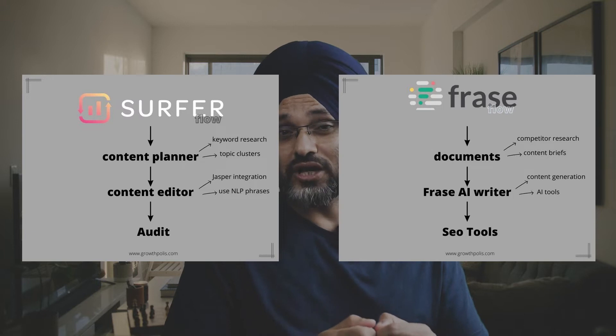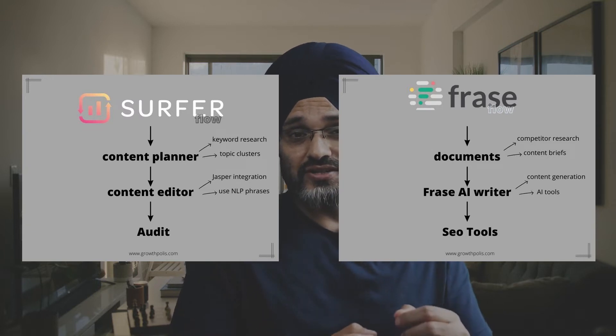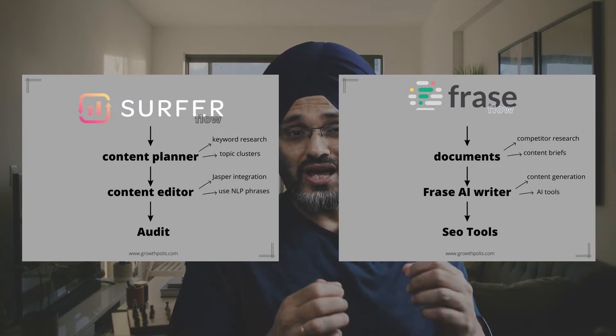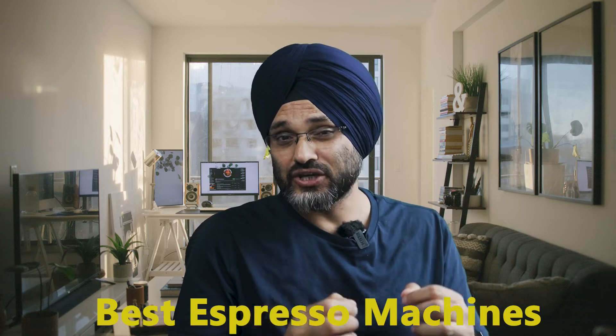We will compare both tools feature by feature, starting with the workflow. First we will look at Surfer SEO and then compare it with Phrase. I have randomly picked a money keyword — 'best espresso machines' from the coffee niche — and a website ranking on the third page. Throughout the video we will use them as an example of optimization in both tools.